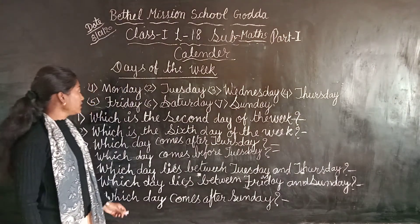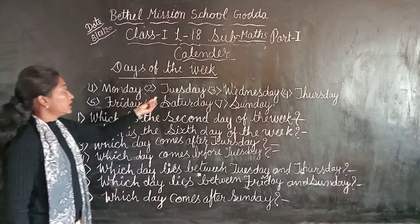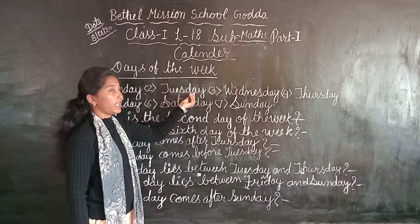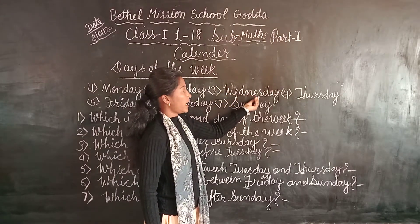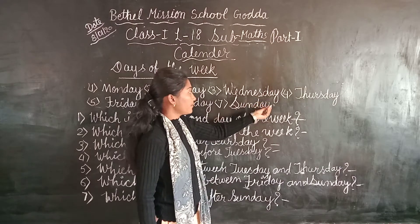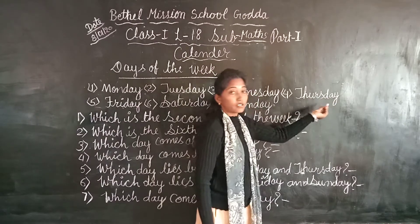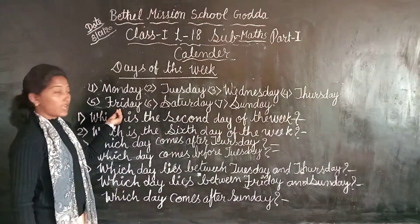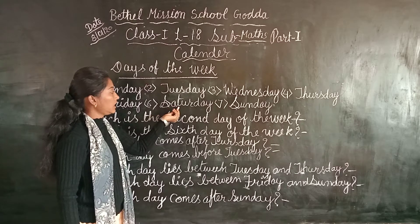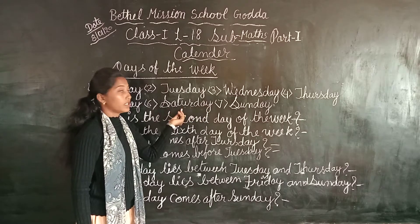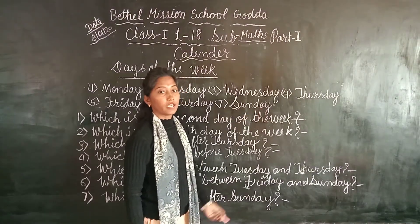Now you will see the spelling one by one. M-O-N-D-A-Y Monday, T-U-E-S-D-A-Y Tuesday, W-E-D-N-E-S-D-A-Y Wednesday, T-H-U-R-S-D-A-Y Thursday, F-R-I-D-A-Y Friday, S-A-T-U-R-D-A-Y Saturday, S-U-N-D-A-Y Sunday.